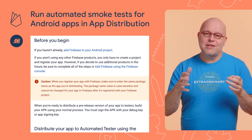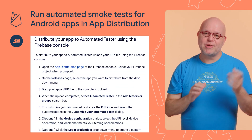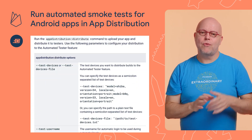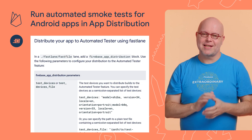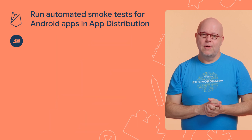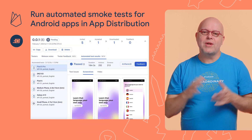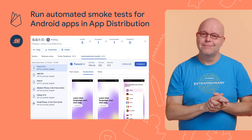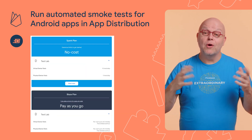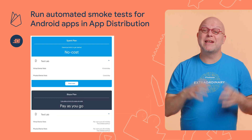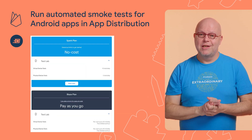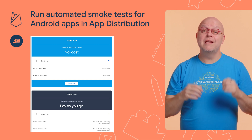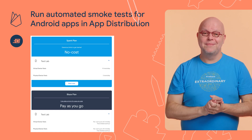You can trigger these automatic tests from the Firebase console, as we just saw, but also from the Firebase CLI, from your app's Gradle build file, and through Fastlane. Once the auto test is completed, you can see the results right in the AppDistro console. The automated tests are powered by Firebase Test Lab and its robot tester, so it has the same pricing and uses the same no-cost tier as your existing automated tests.